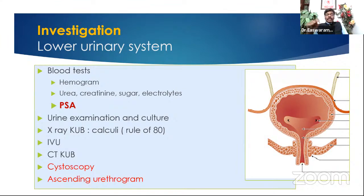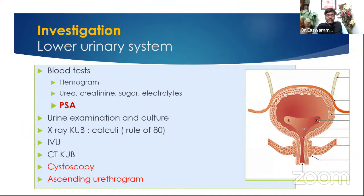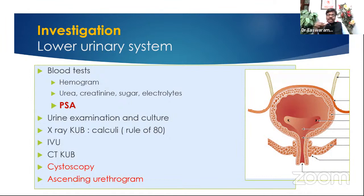Three things for IVU: overnight starvation, bowel preparation with a laxative tablet, and ensure normal serum creatinine. Plain CT KUB is used for stones; contrast CT is used for tumors — always ensure normal serum creatinine before giving contrast. The special investigation for lower urinary system is diagnostic flexible cystoscopy — passing a small video camera through the urethra into the bladder to look for lesions, especially in patients with painless hematuria.